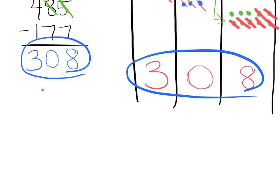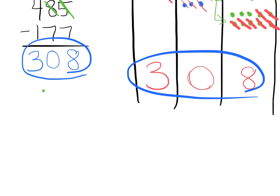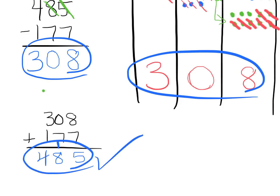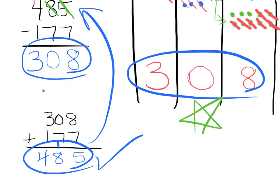Now we should check using addition. We take our answer 308 and add 177. 8 plus 7 is 15 — that's a 5, and we bundle together 10 of those 15 for an extra dot in the tens column. 0 plus 7 tens plus 1 ten is 8 tens. Then 300 plus 100 gives us 400. So our check is 485, exactly what we started with. That tells us our answer of 308 is correct.